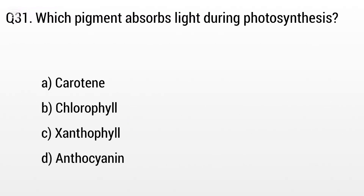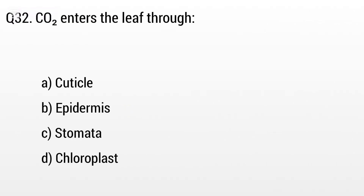Question 31. Which pigment absorbs light during photosynthesis? Option A: Carotene, B: Chlorophyll, C: Xanthophyll, D: Anthocyanin. The right answer is option B, Chlorophyll.